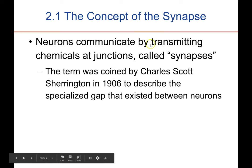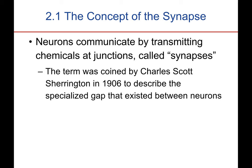A synapse is just a special point of communication between two neurons. In general, that communication occurs by way of chemicals, so it can be electrical as well. These points of communication are called synapses.